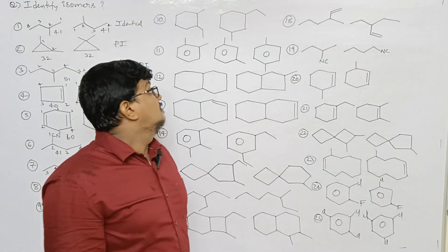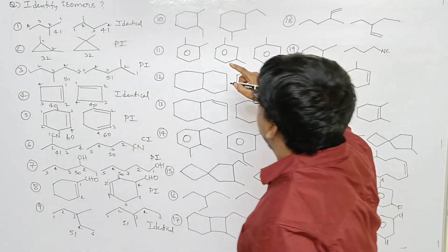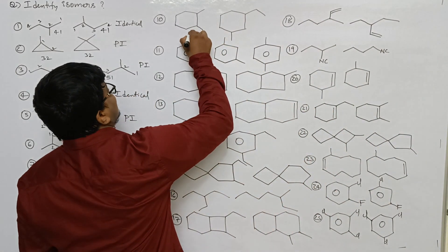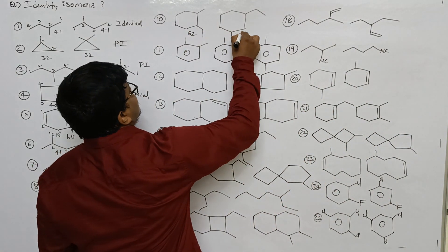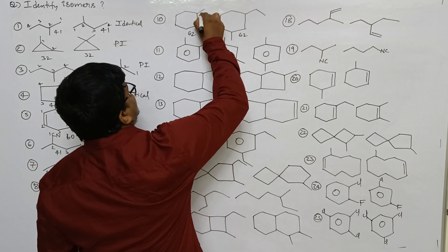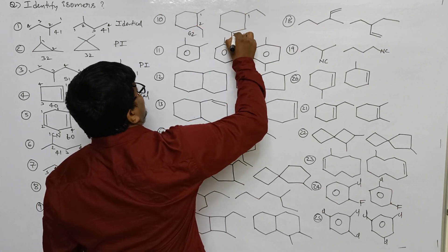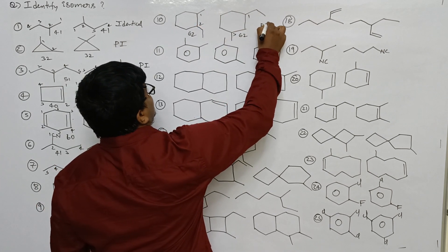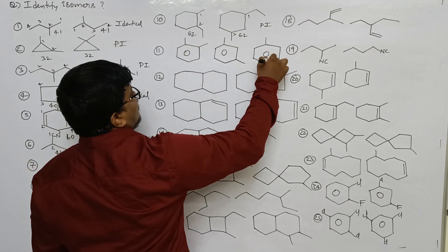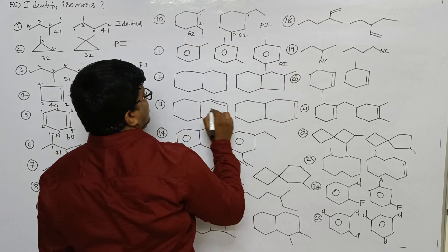Tenth one: both having isomeric number same — 62 and 62. Position differs: one-two position versus one-three position. So these two are positional isomers. One-two, one-three, one-four — positional isomers.